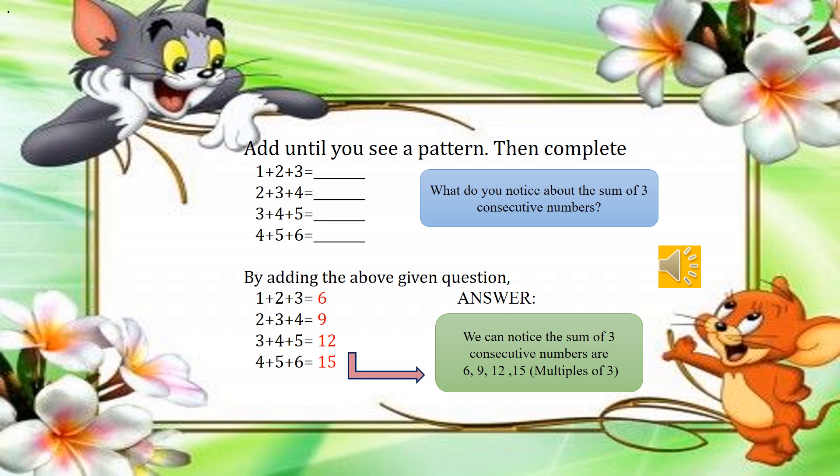Our next question: add until you see a pattern, then complete. What do you notice about the sum of 3 consecutive numbers? Adding them: 1+2+3=6, 2+3+4=9, 3+4+5=12, and 4+5+6=15. We can notice the sums are 6, 9, 12, and 15 — these numbers are all multiples of 3.